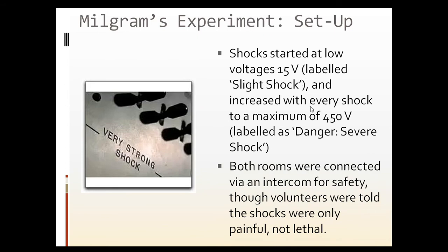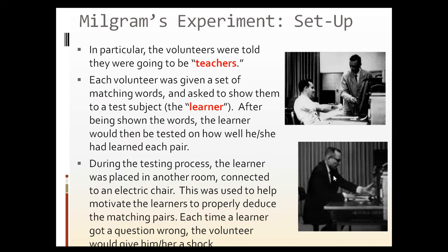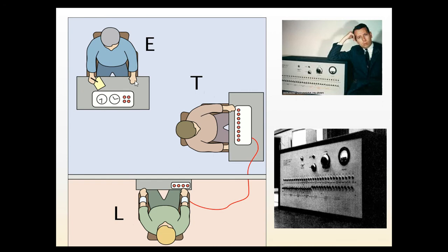Shocks started at 15 volts and went up to 450. Both rooms were on an intercom, so you couldn't see the person but if there was an issue they could tell you, and the man in the white coat taking the authority role as experiment runner would know if there was a concern. The learner would be separated while the teacher and the experiment administrator sat together. You can see the actual voltage machine in the picture — at the end it says 'intense' and eventually goes all the way to 'XXX' shocked.